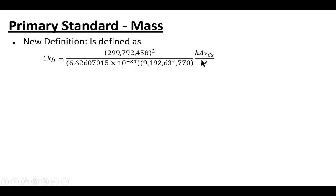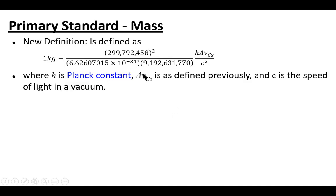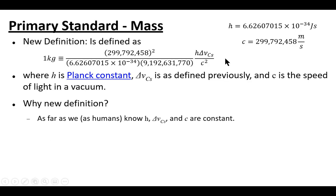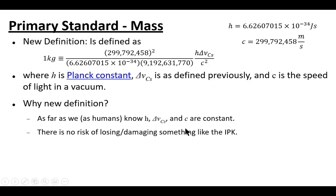Here's the new definition. These are the types of things you're dealing with now - you've got Planck's constant in there, that same denominator based on the second, and the speed of light in a vacuum in the c-squared part. There are numerical values for Planck's constant and the speed of light in a vacuum. As far as we know, Planck's constant, the cesium frequency, and the speed of light are constant. So now we have a formula to determine a kilogram without having to have a kilogram to measure from.